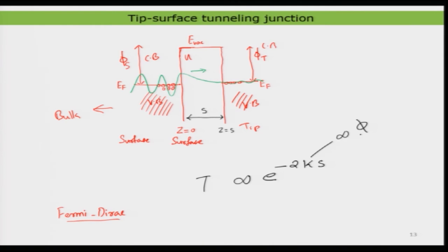The average barrier height is psi_t plus psi_s divided by 2. Since we have taken the same material, psi_s and psi_t are equal. The tunneling probability defines how much electron would tunnel from one electrode to the other, and it is defined by the distance. That is why we need the tip to be in very close proximity to the surface.